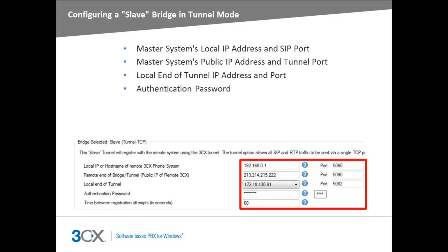To configure the slave side of the bridge in tunnel mode, you will need to enter the local IP or hostname of the remote 3CX phone system and the port, the public IP address of the master side 3CX phone system and the tunnel port — which is 5090 by default — the slave system's local tunnel IP address and port, which are automatically generated by the management console, and the authentication password, keeping in mind that this must match the password set on the master system.